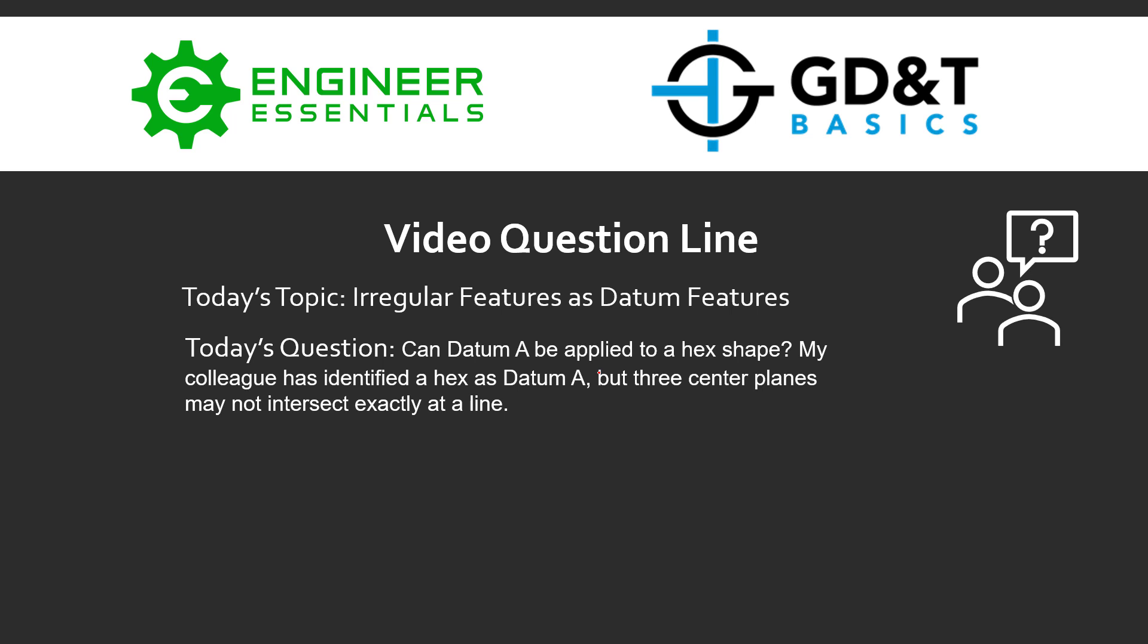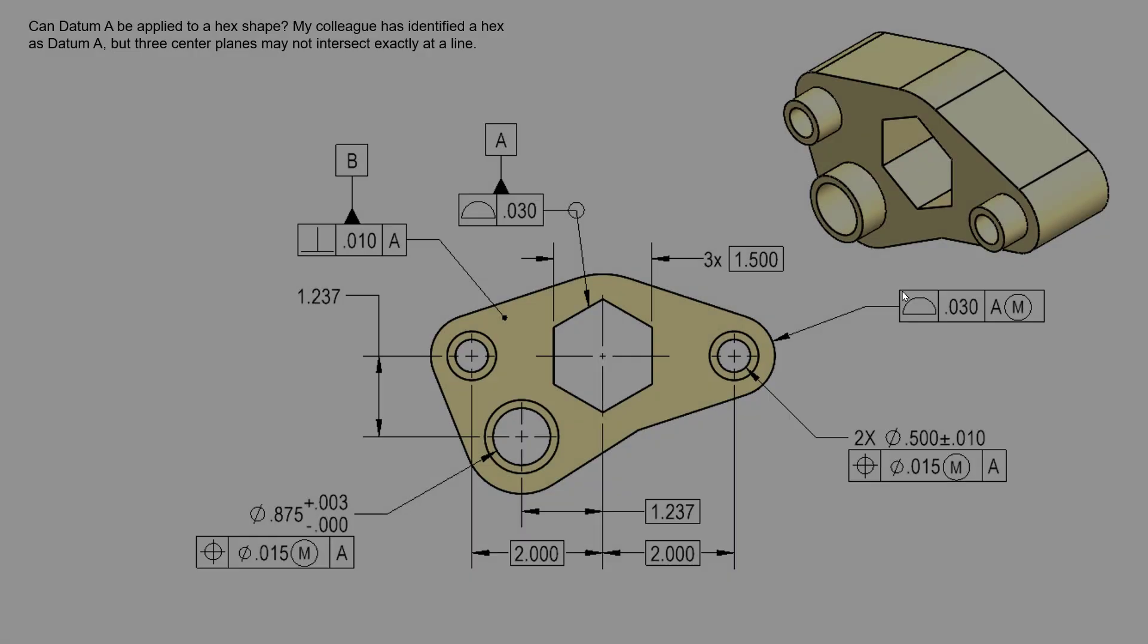But three center planes may not necessarily intersect at the exact same place, creating a datum axis. So we have a couple of conversations to have before we dive into this. The first being that just because something is datum A doesn't necessarily make it a primary datum.